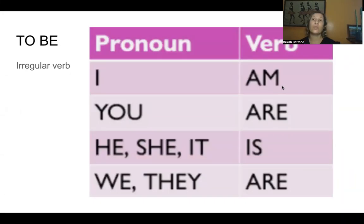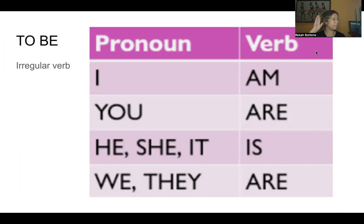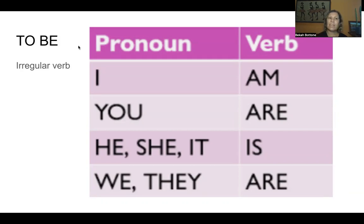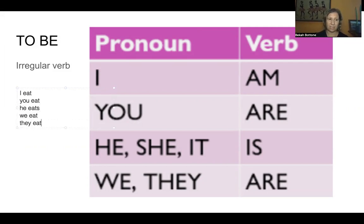Now we can use the verb to be with the different subjects. Repeat after me: I am, you are, he is, she is, it is, we are, they are. This is an irregular verb. A regular verb is like: I eat, you eat, he eats, we eat, they eat — we only change the S. Irregular verbs look different.